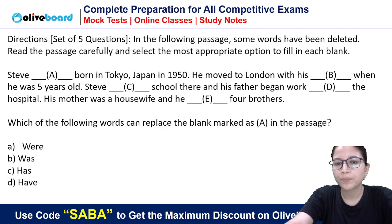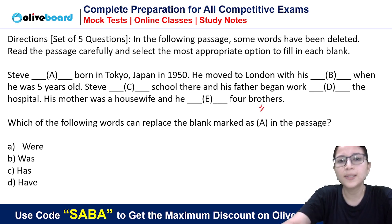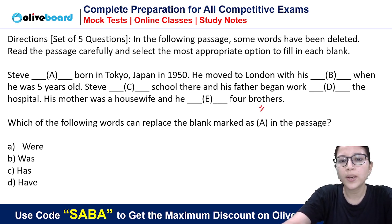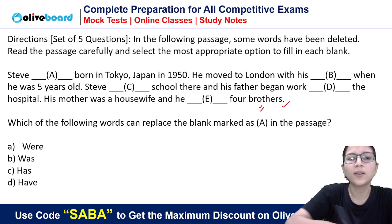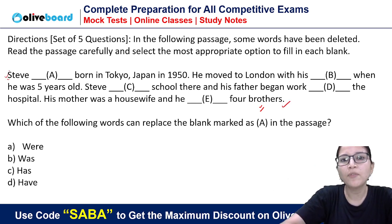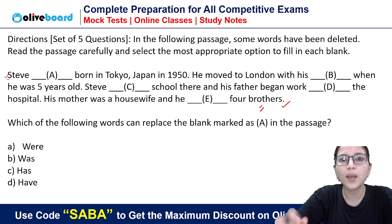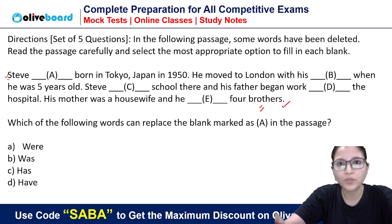Now, this is a cloze test — a very easy cloze test. There are five blanks. The right way to do a cloze test is: first, read the whole passage once. The second time, substitute the options. You will get an idea of the tense used throughout the passage and what verb or part of speech is needed.